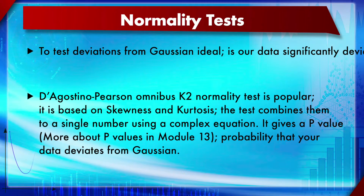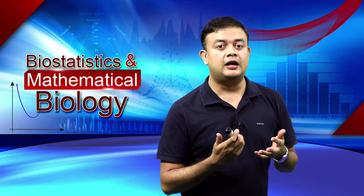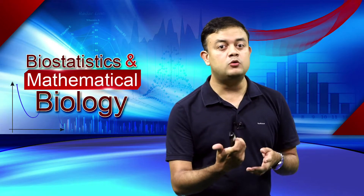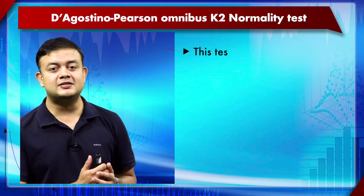The K2 Omnibus test gives you a p-value — a probability value. We will cover p-values in depth in module 13. The p-value here is essentially the probability that your data deviates from the Gaussian. A very high p-value means the data is consistent with the Gaussian, but a very low p-value means the data significantly deviates from Gaussian — which is not a good outcome.